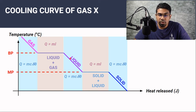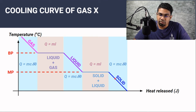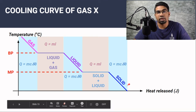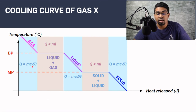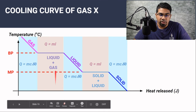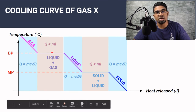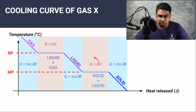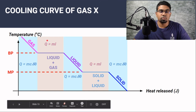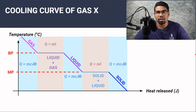Until all the liquid particles have become solid particles, then the temperature will start to drop again. So again, when there is a change in temperature — in this case a drop in temperature — we use Q equals MC delta theta. And when there is no change in temperature, when there is a change in the phase of matter, which is what is going on at those two plateaus, we use Q equals ML.